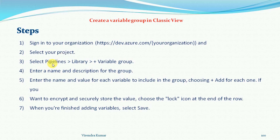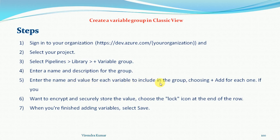Under the project, you can go to the Pipeline section, then go to the Library, and click on the plus Variable Group button. Enter a name and description for the variable group.